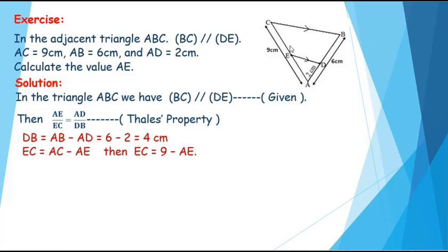And also EC equals AC minus AE, then EC equals 9 minus AE. By substituting the values of DB and EC in this relation, we get AE over 9 minus AE equals 2 over 4.